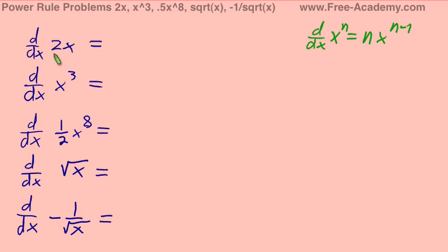So with that, we can start solving this. And any problem where we have a constant out front, we can just pull that. Remember our constant rule. So this is the equivalent of 2 times the derivative of x.